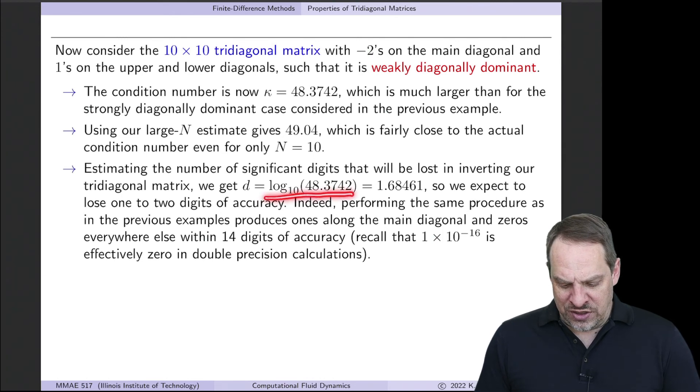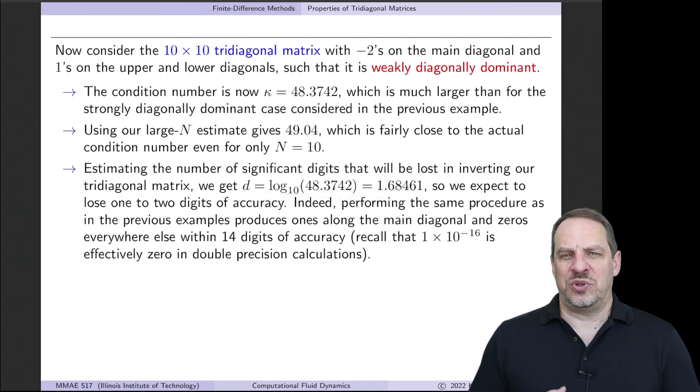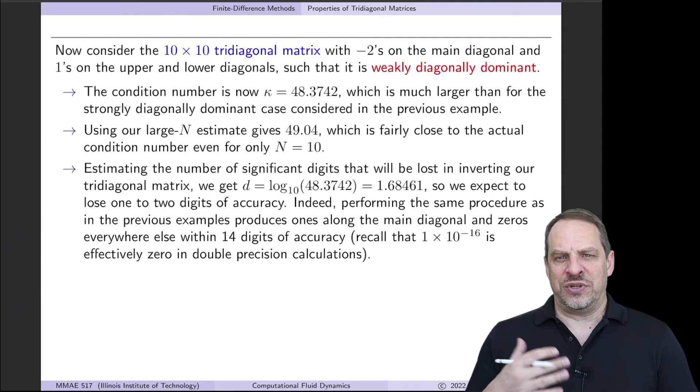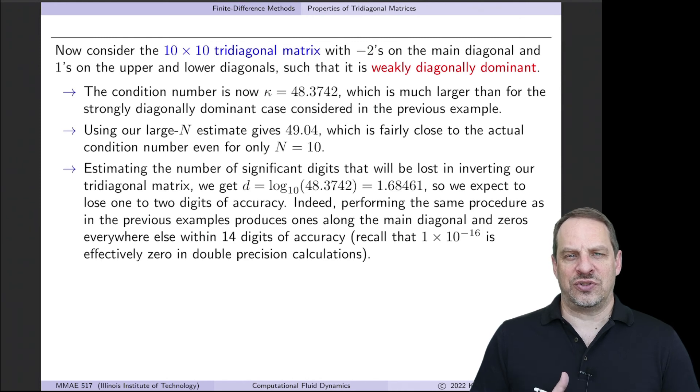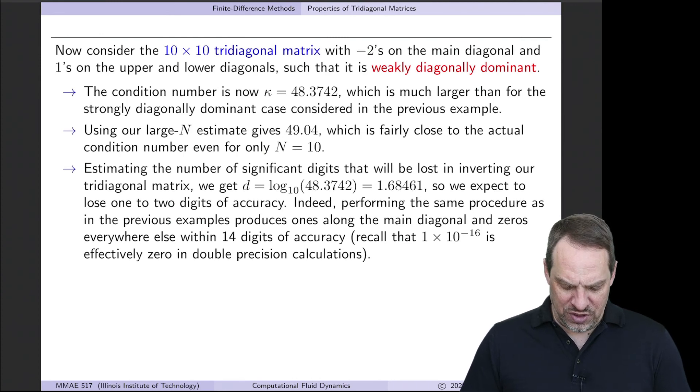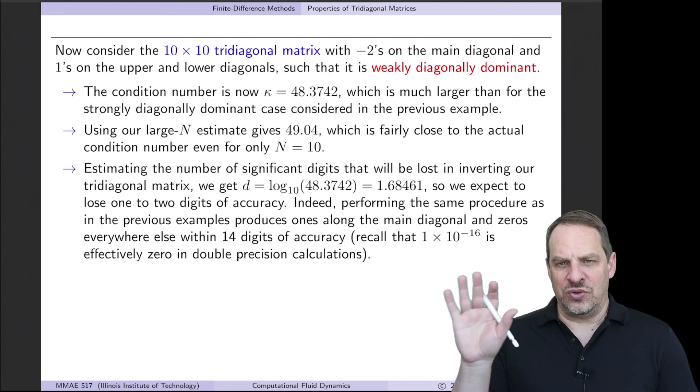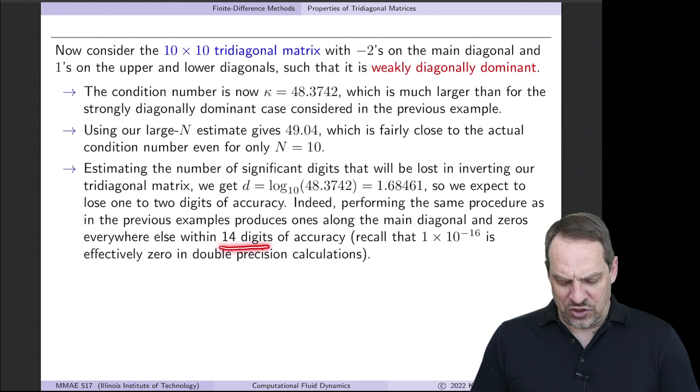Now when you take the log base 10 of the condition number, you get 1.7. So we expect to lose no more than two digits of accuracy when doing operations with this matrix. Still not bad. Clearly not as good as the strongly diagonally dominant case, but not too bad, given that we have 16 digits of accuracy to work with. Once again, if you do the operations I've suggested, you'll see that you do indeed get 14 digits of accuracy in the resulting matrix.